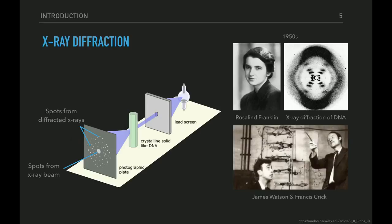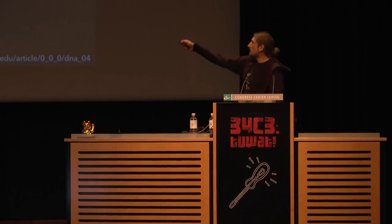Solche Experimente mit Röntgenbeugungen wurden seit Jahrzehnten gemacht. Zum Beispiel der Nachweis der DNS-Struktur war nur möglich, weil Rosalind Franklin solche Röntgenbeugungsbilder von DNS-Kristallen gemacht hat. Eine kleine Randnotiz: Ratet mal, wer hat den Nobelpreis gewonnen? Ja, das waren diese zwei weißen Männer. Das ist eine ein bisschen hässliche Geschichte, aber ich denke, das sollte man sich mal nachlesen.